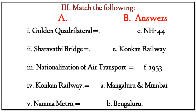Match the following — Column A to Column B: 1. Golden Quadrilateral — National Highway 44. 2. Sharawati Bridge — E. Konkan Railways. 3. Nationalization of Airport — 1955. 4. Konkan Railways — Mangaluru and Mumbai connection. Metro — Bengaluru.